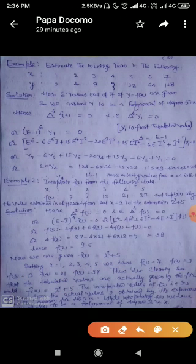Thus we clearly see that the tabulated values are actually given by f(x) equals 2 to the power x plus 5. The interpolated value of f(2) is 9.5, which differs from the actual value 9 obtained by the expression 2 to the power x plus 5. The reason for this is while interpolating f(2), we have assumed f(x) to be a polynomial of degree 3 in x.